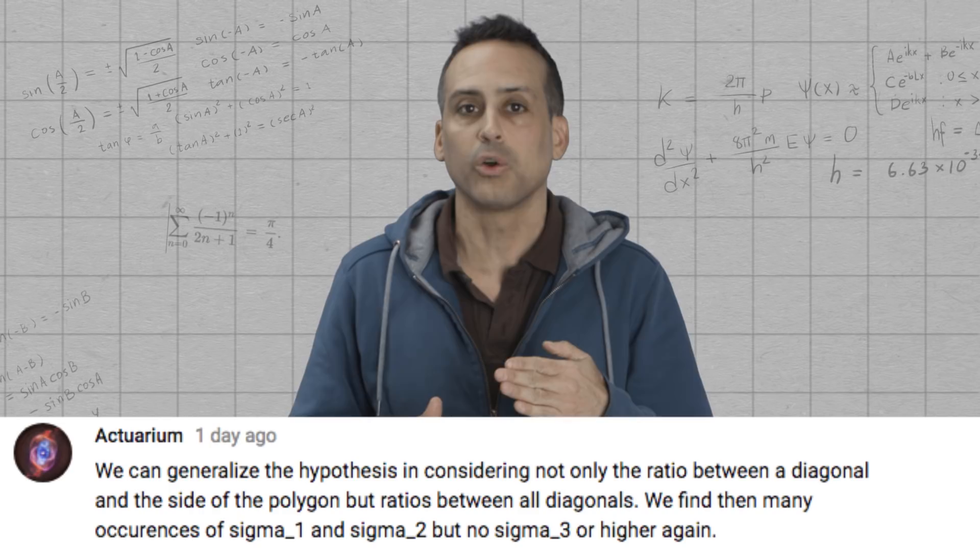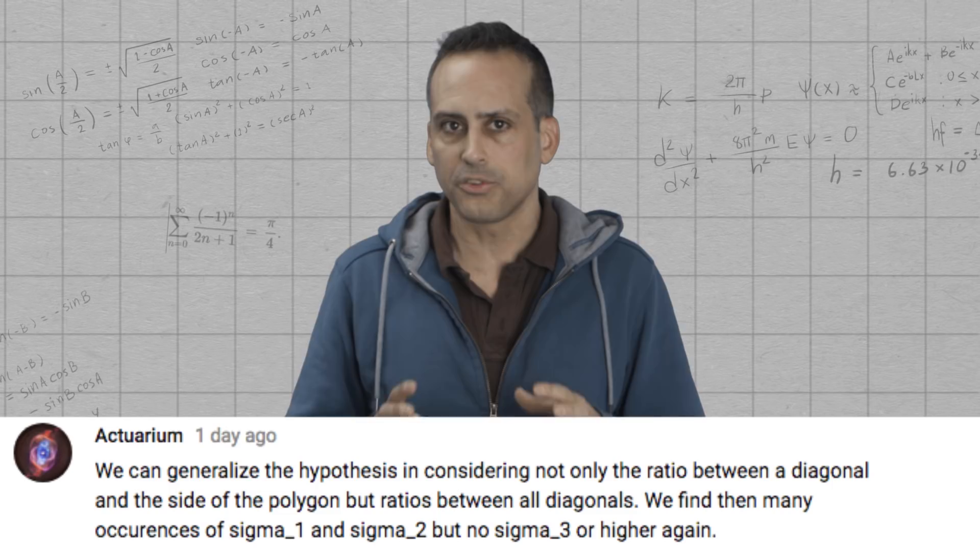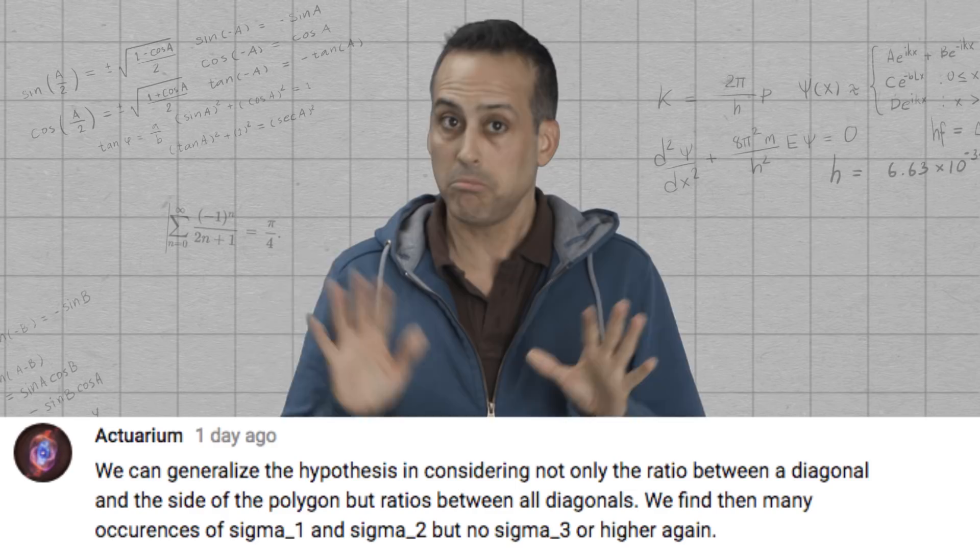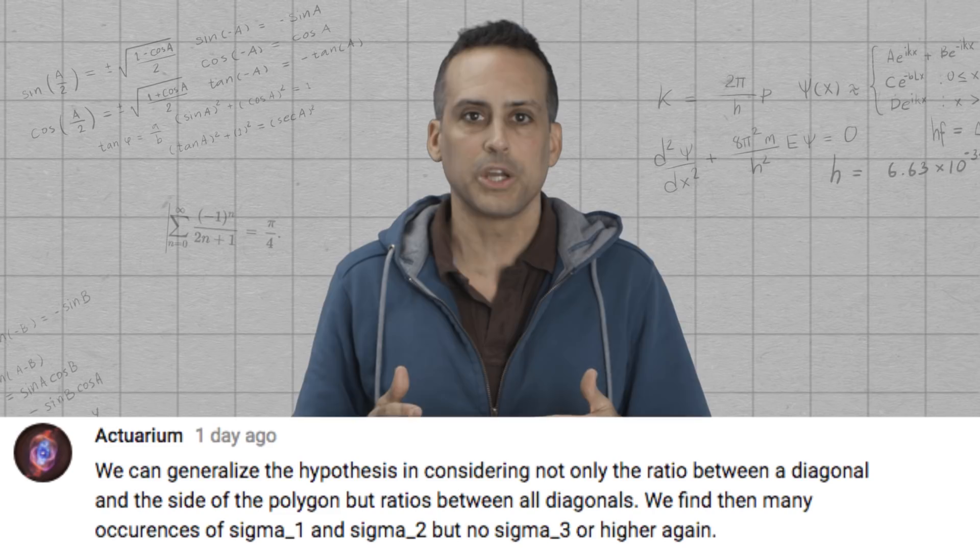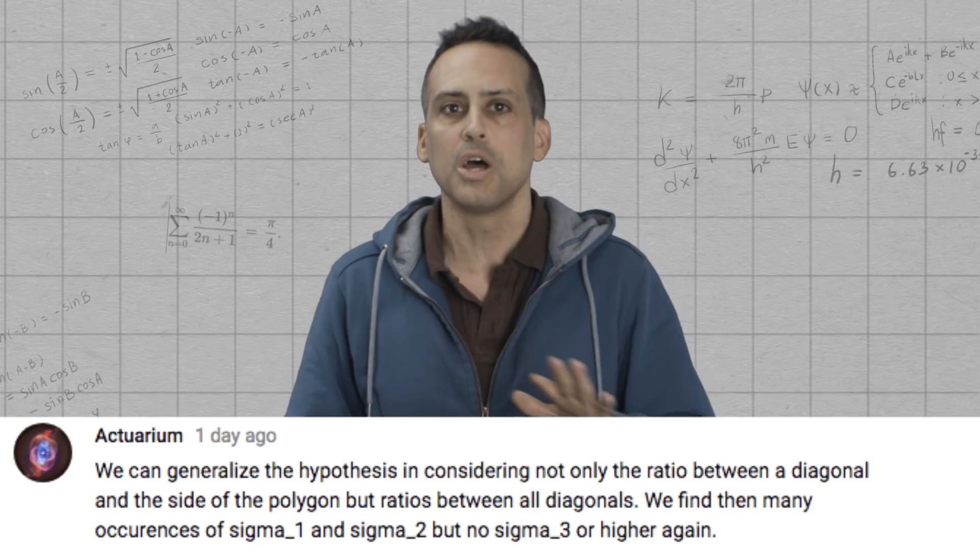For another nice generalization, Actuarium started looking at diagonal to diagonal ratios and not just diagonal to side ratios and regular polygons. And I haven't looked at those results to make sure. I haven't double checked them myself to see if they're right. But if they're right, they're very interesting. Apparently, there are a whole lot of polygons in which you can find diagonal to diagonal ratios that are either the golden ratio or the silver ratio, at least in a preliminary numerical search. But nothing beyond that.